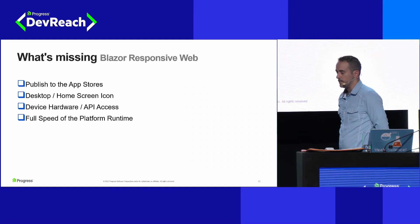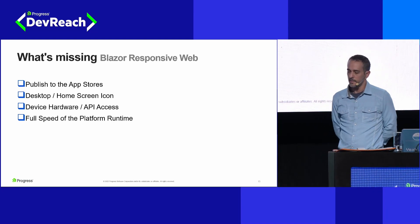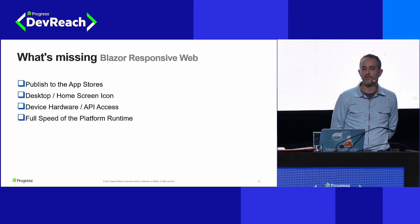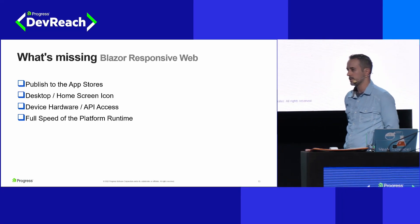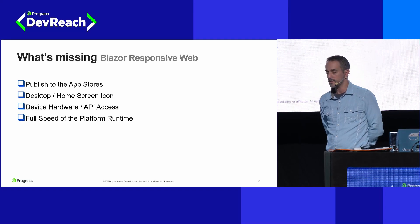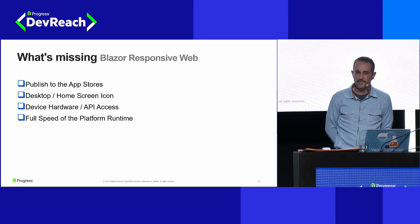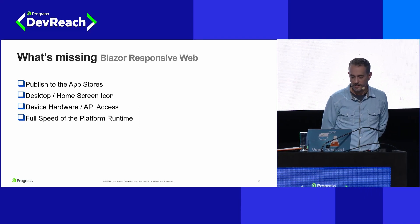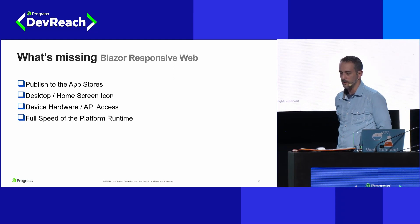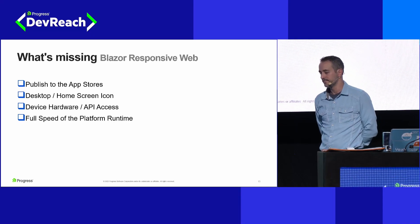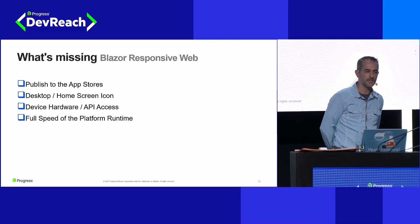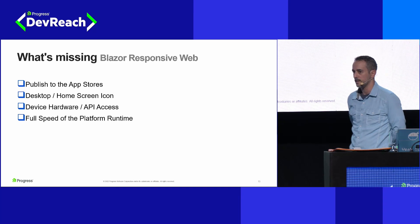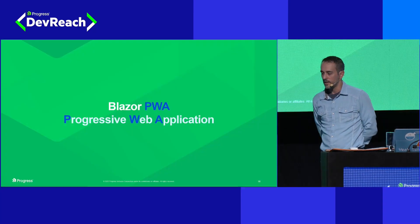Even though we can write responsive web applications that run on all screen sizes, we're still missing some things we get from deploying directly to an app store. We can't publish a responsive WebAssembly app to the app store. It doesn't get a desktop icon or home screen icon on Android or iOS. It doesn't have access to device hardware APIs. And as mentioned, WebAssembly, even though it's great at UI tasks, is not running at the full speed of the .NET runtime you'd get on a desktop experience.